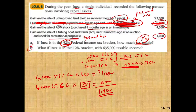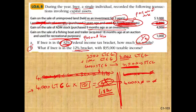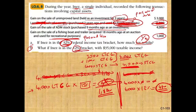Now, part B: what if Inez was in the 12% tax bracket? In the 12% tax bracket, the $4,000 long-term capital gain is times 0%, which equals $0 — so it's no longer taxable. The $600 on long-term is gone. What remains is the $4,000 short-term capital gain, which is taxed at ordinary income — 12%. So $4,000 times 0.12 equals $480. You'll pay $480 in the 12% bracket, versus $1,880 in the 32% bracket.